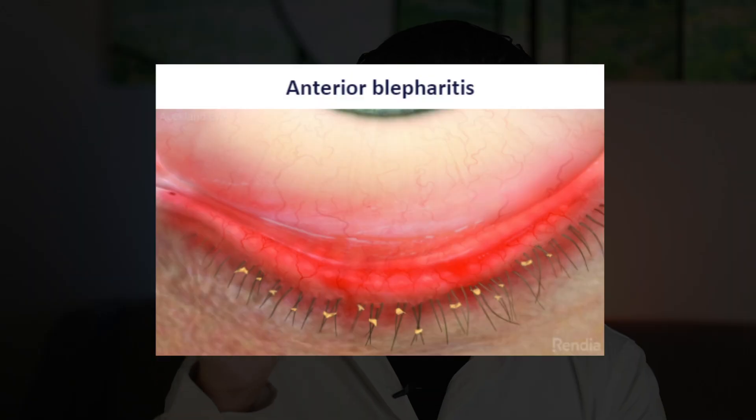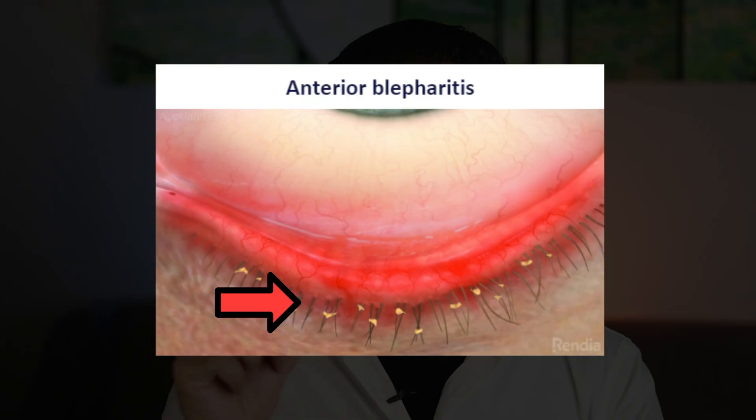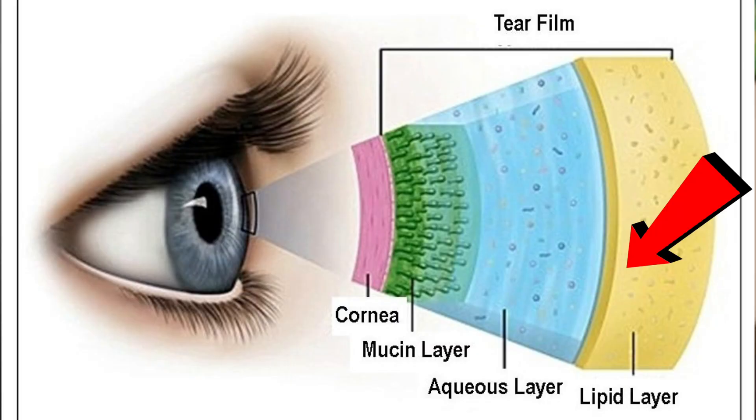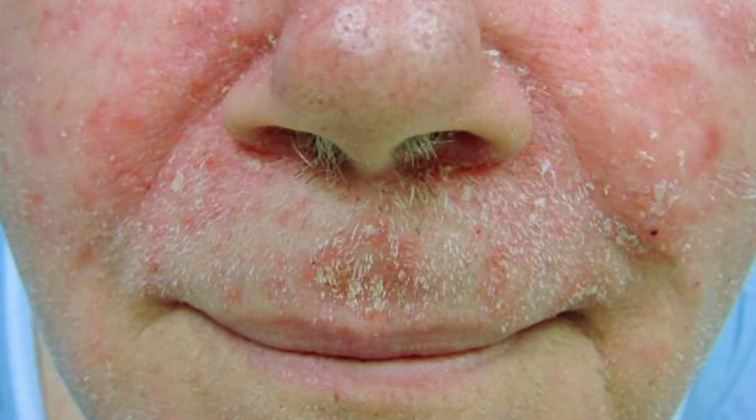There are two types of blepharitis. Anterior blepharitis affects the outside of the eyelid where your lashes are, and is often caused by bacteria or dandruff. Some bacterial strains produce the enzyme lipase, which breaks down the lipid components of the tear film, leading to the production of free fatty acids, which can worsen the inflammation. The anterior type is more common in those who also have seborrheic dermatitis.